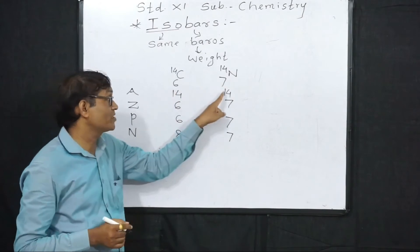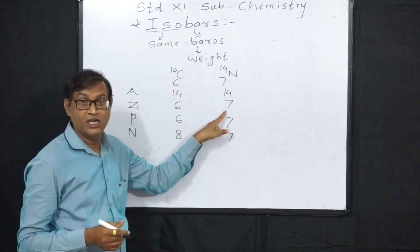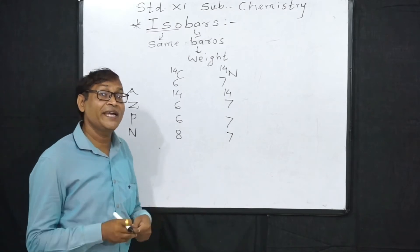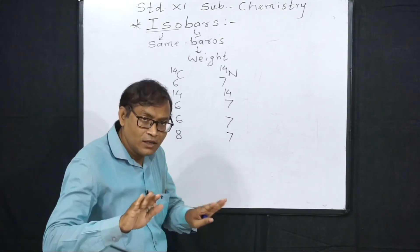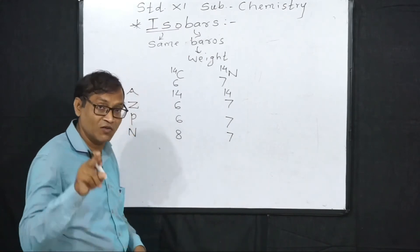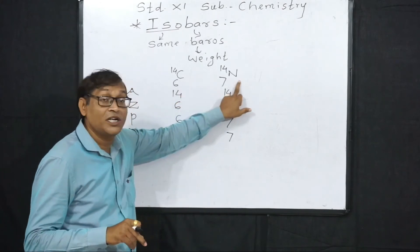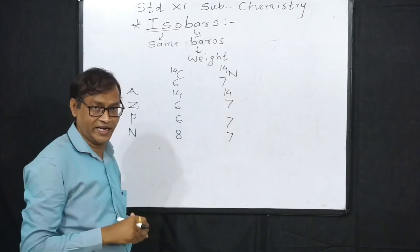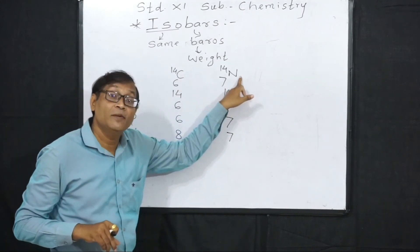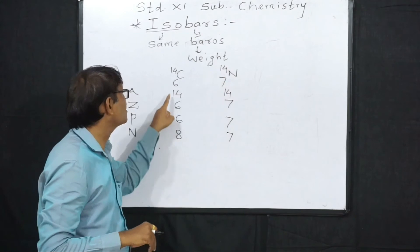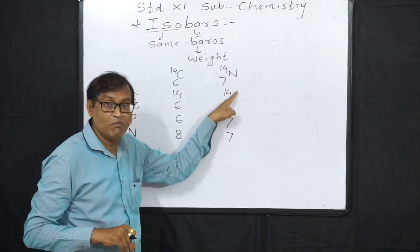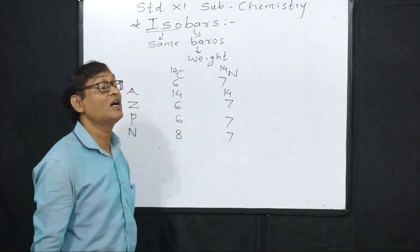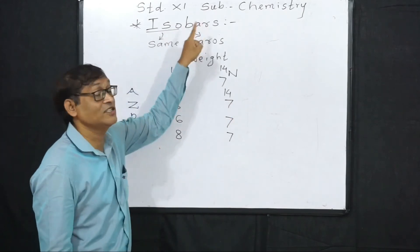Mass number is same, atomic number is different. Atomic number is different, the elements are obviously different. Therefore, the definition of isobars: atoms of different elements having the same mass number but different atomic numbers are known as isobars.